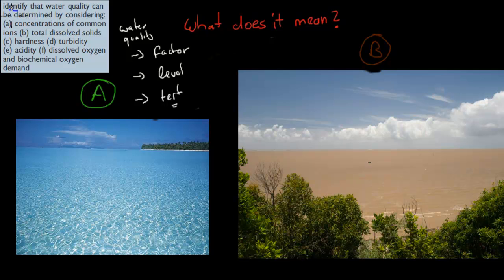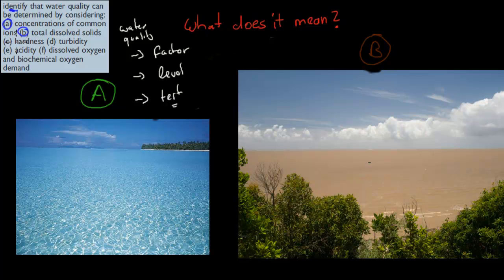The dot point says 'identify' — in this case identify means recognize. Recognize that water quality can be determined by considering: A) concentration of common ions, B) dissolved total dissolved solids, C) hardness, D) turbidity, E) acidity, and F) dissolved oxygen and biochemical oxygen demand. I will go through each of those briefly, with enough detail to cover the dot point.